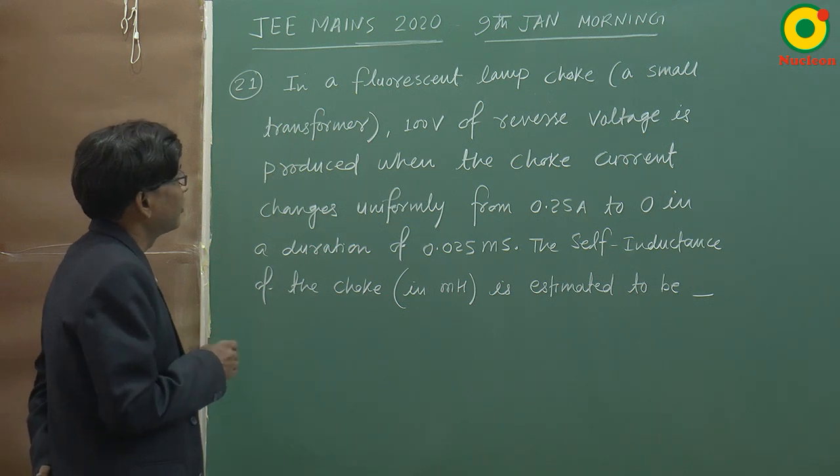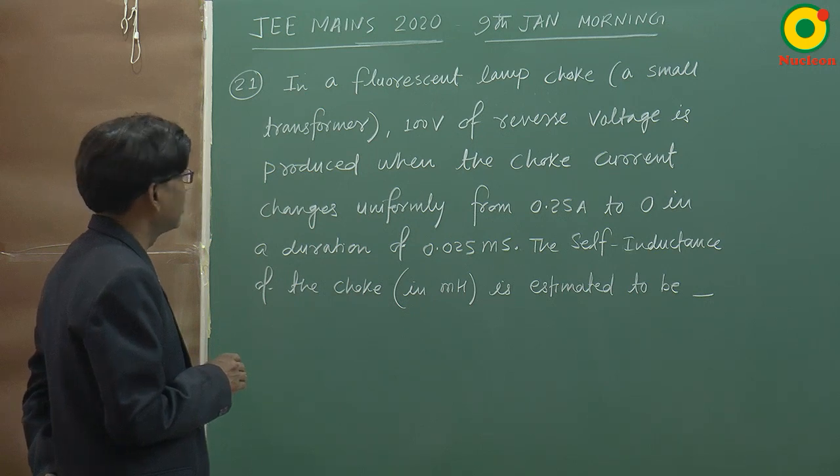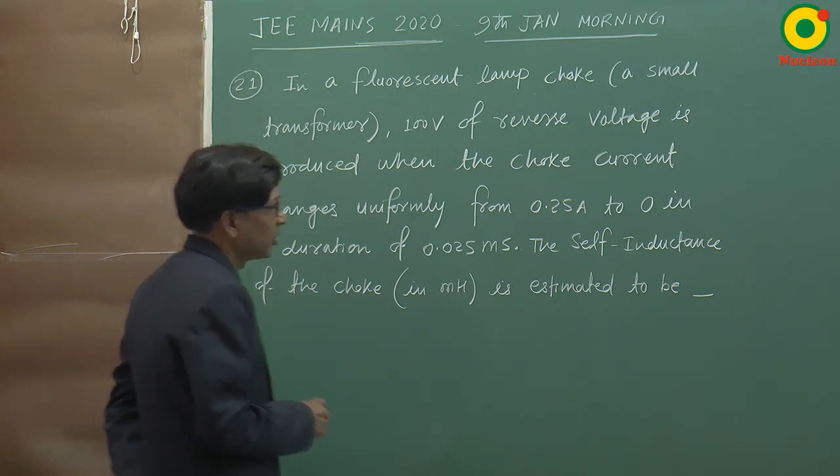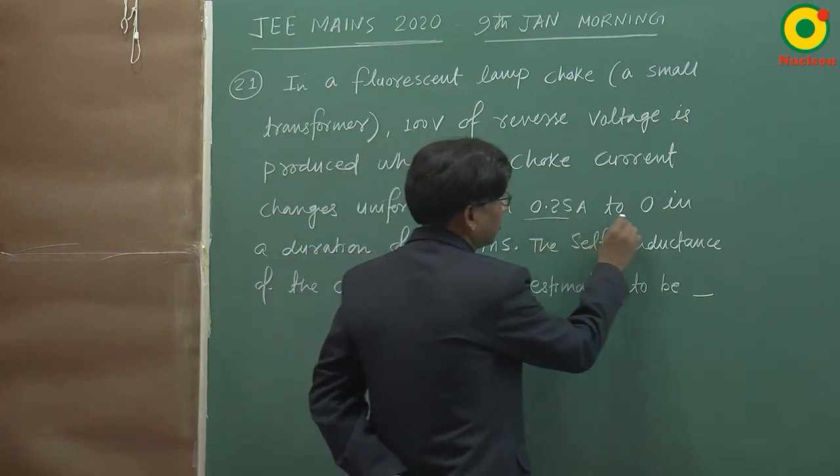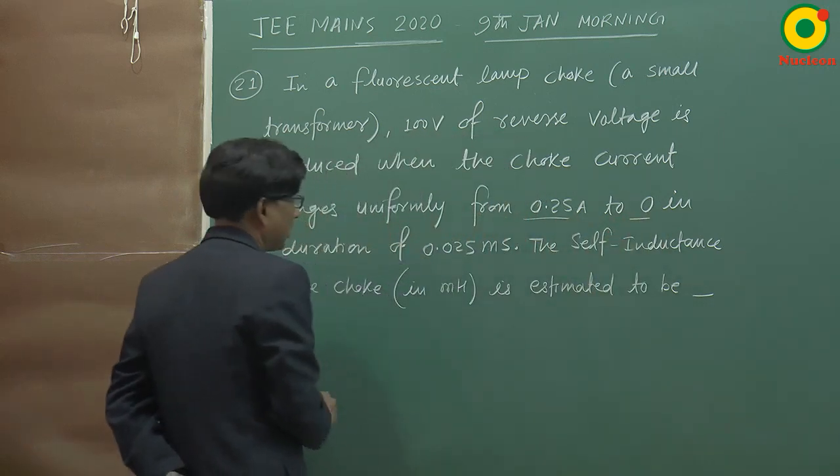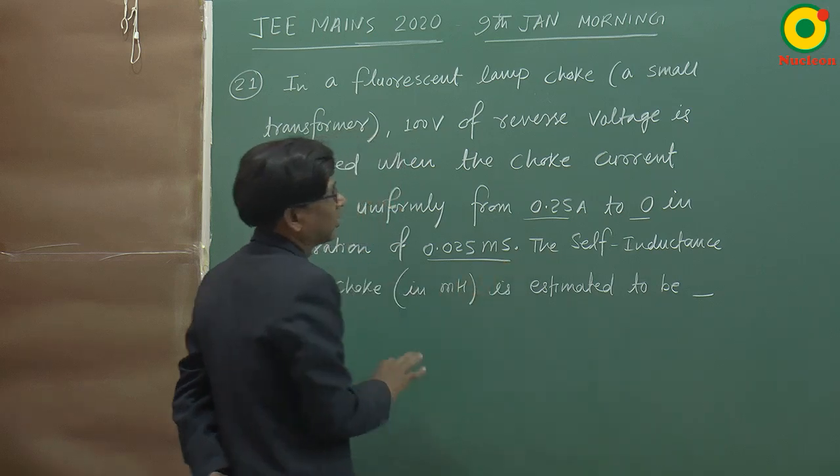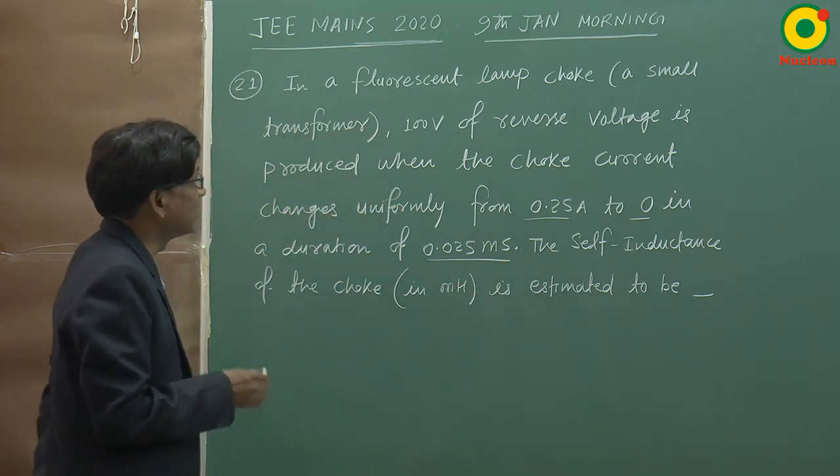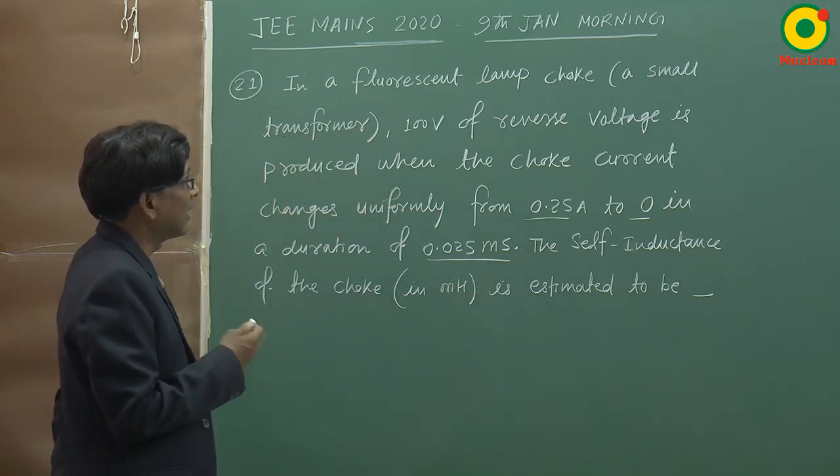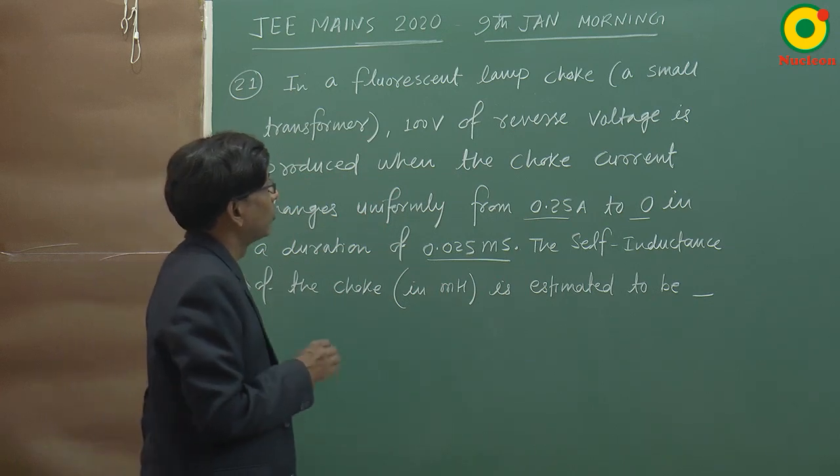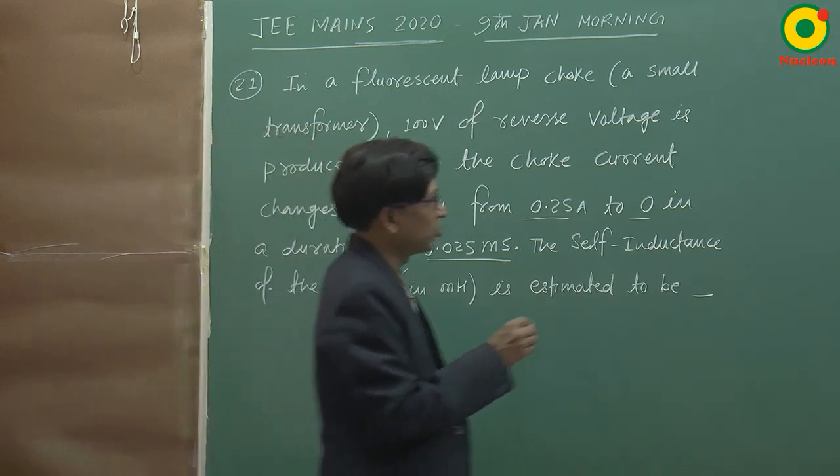In a fluorescent lamp choke, 100V of reverse voltage is produced when the choke current changes uniformly from 0.25 ampere to 0 in a duration of 0.025 ms. यह choke coil होता है, और यहाँ पर choke lamp है। choke coil होता है वहाँ पर।